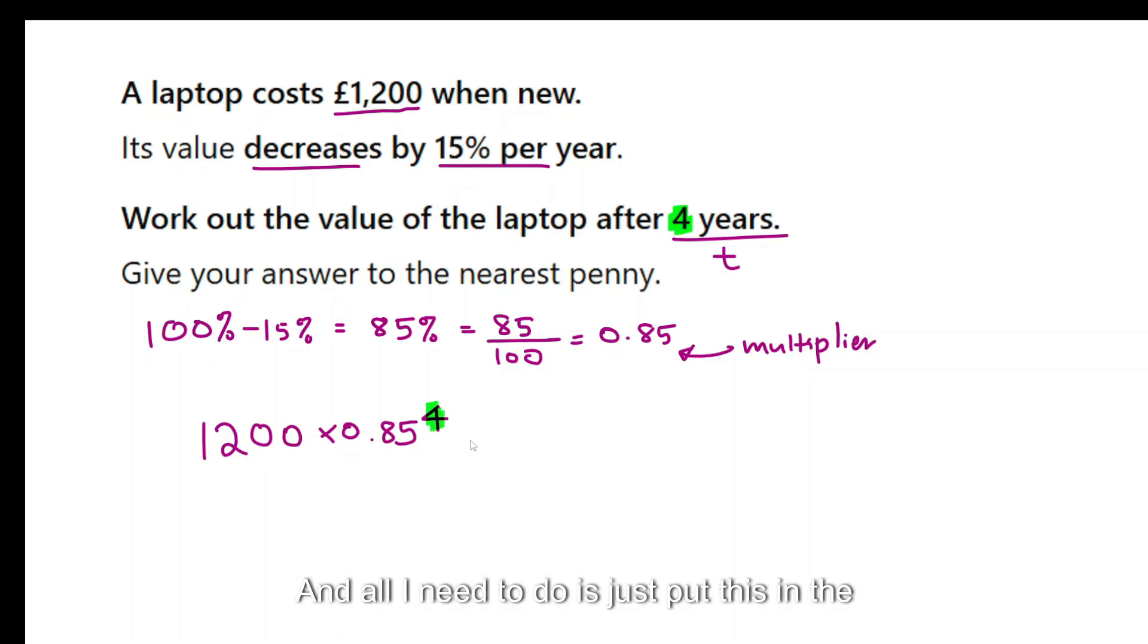Here, and all I need to do is just put this in the calculator. So 1200 multiplied by 0.85 raised to the power 4 gives me £626.4075. To the nearest penny, that's